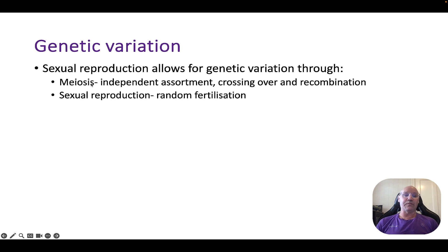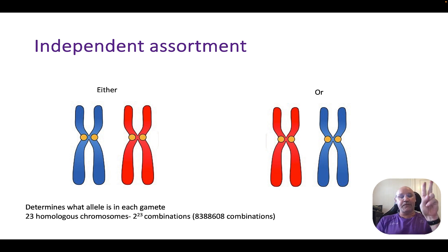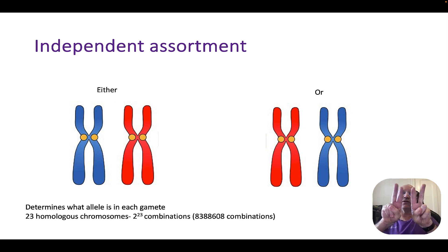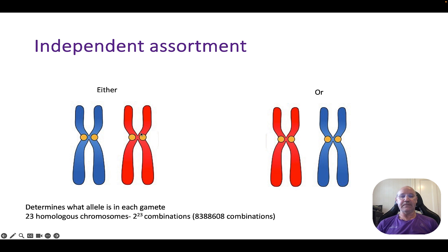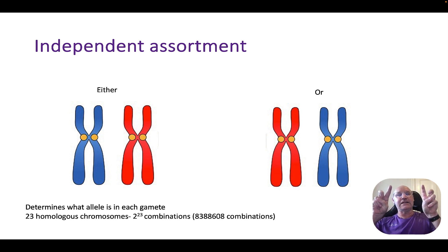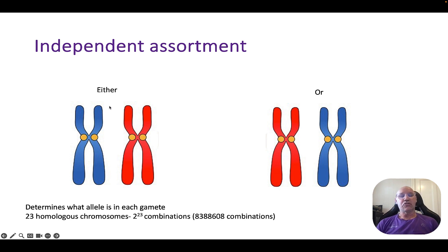Let's talk about the two meiosis processes in more detail, starting with independent assortment. Consider an organism with just two homologous chromosomes. After DNA replication we have two sister chromatids. They can align in two different orientations across the cell. Which particular chromatid ends up in each gamete will vary. With just one pair it doesn't seem significant, but with 23 pairs of homologous chromosomes, we get two to the power of 23 different combinations just through independent assortment.